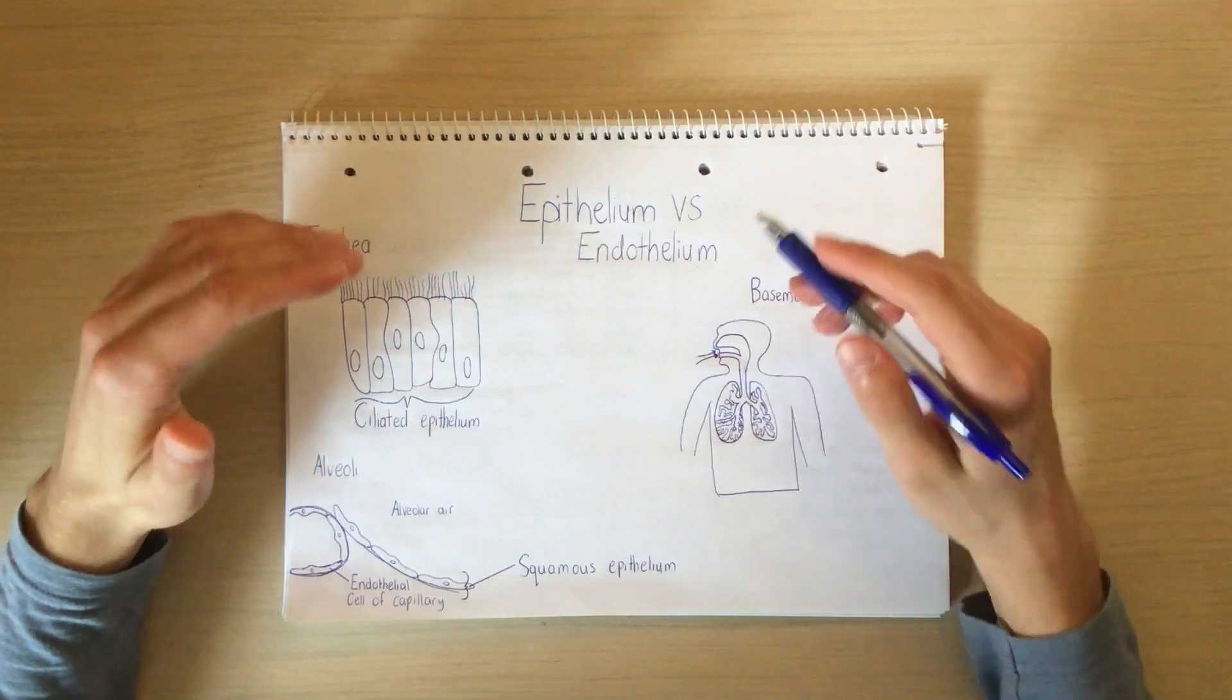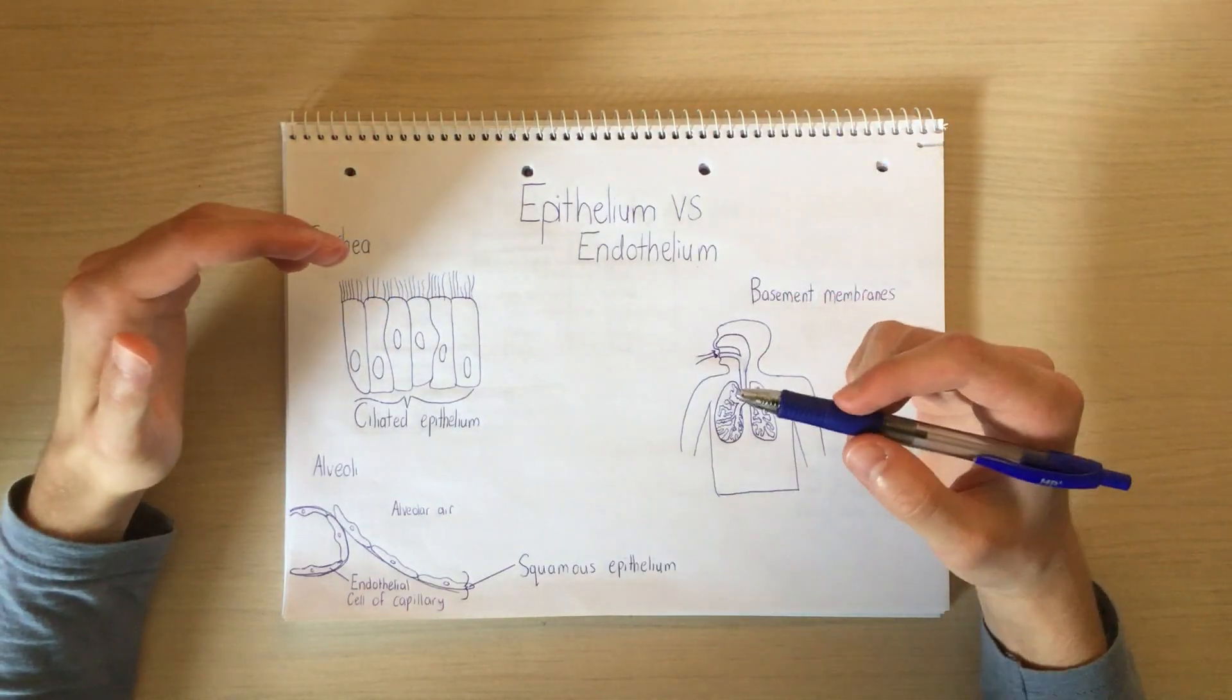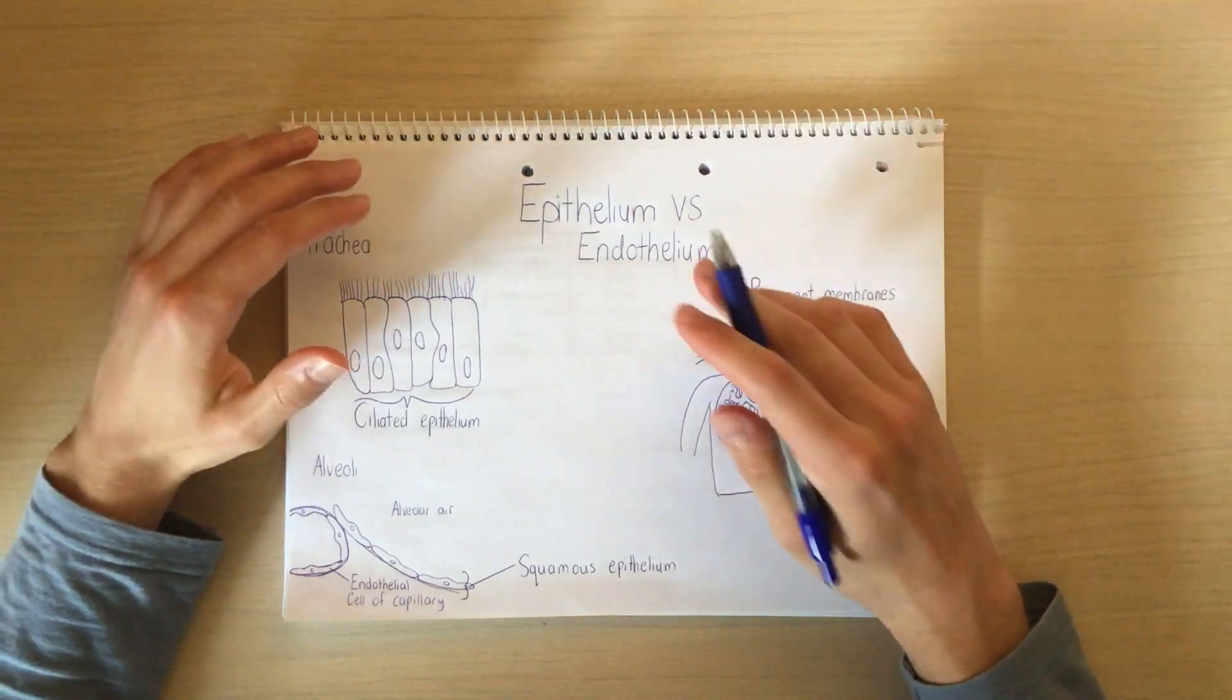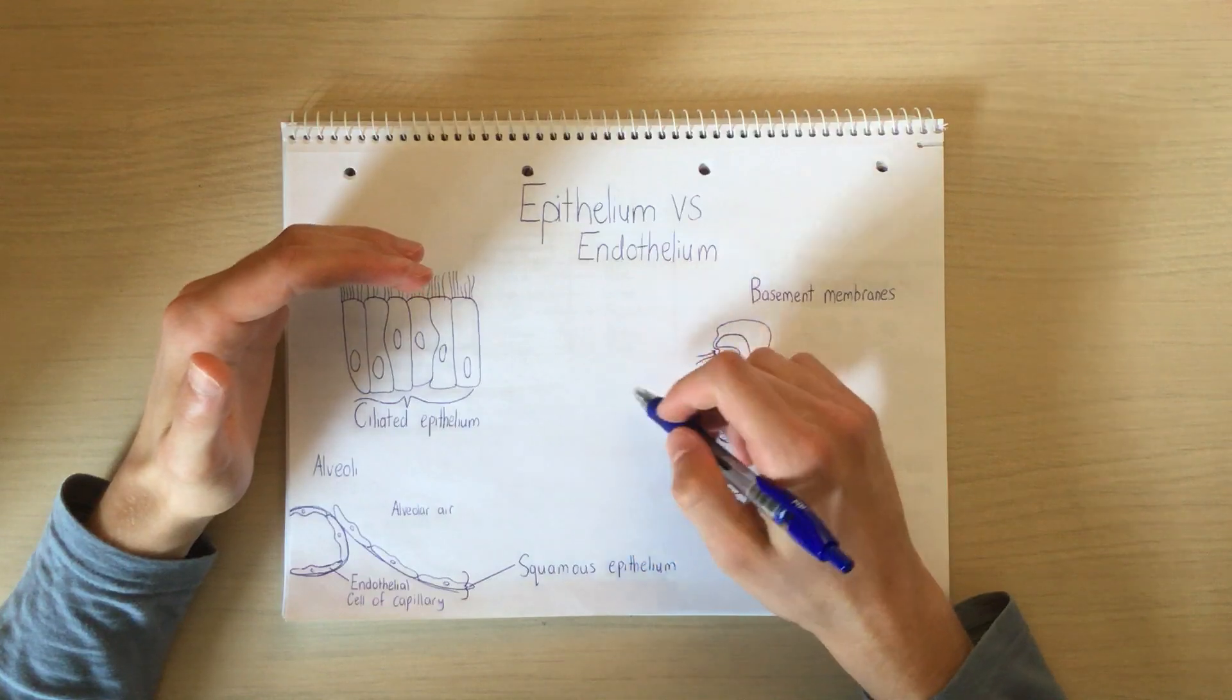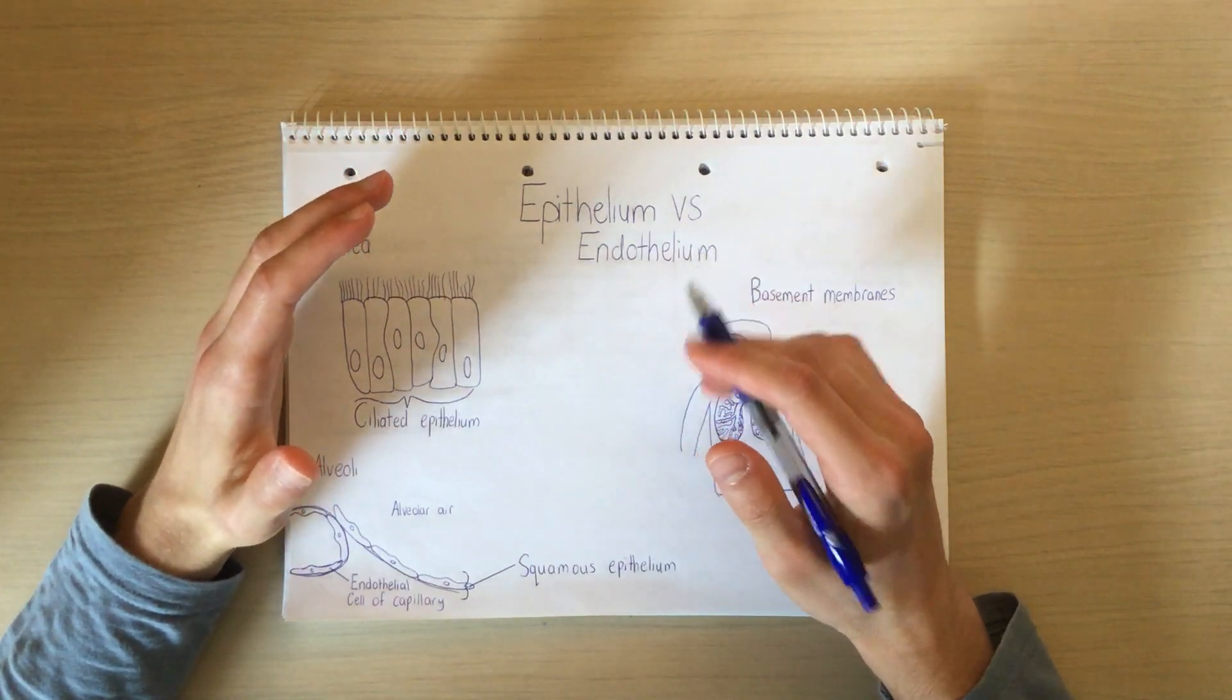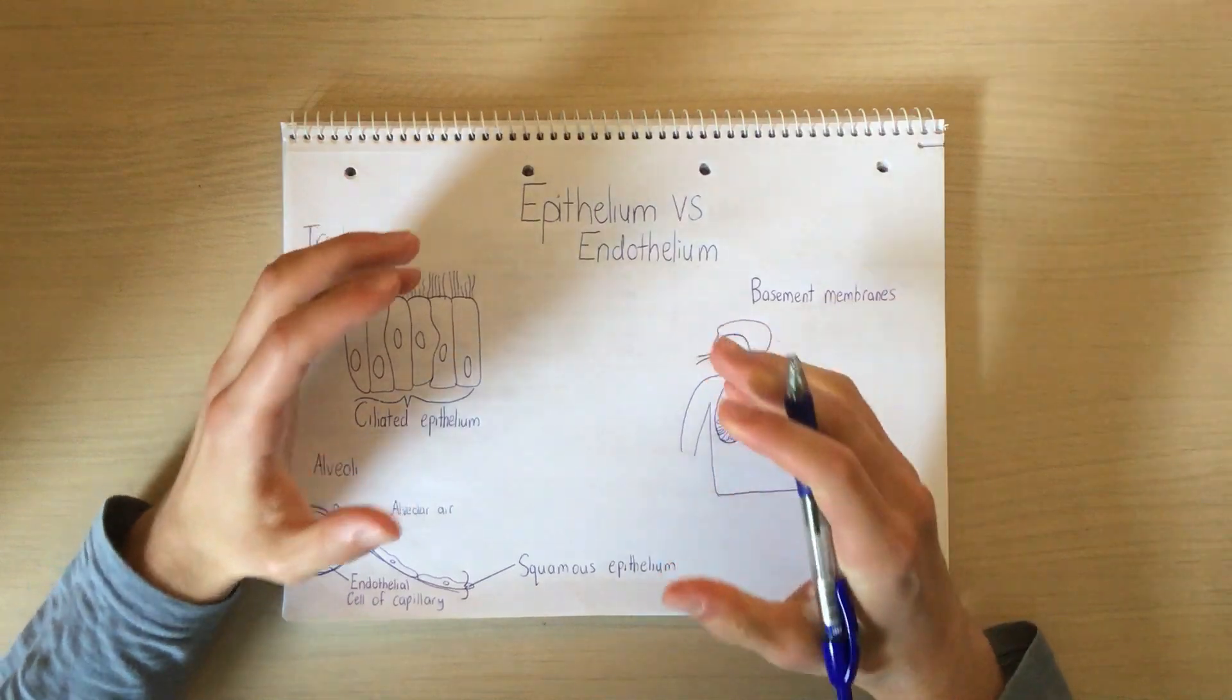Now, before we move on to the endothelium tissue, it's important to understand, in humans, our circulatory system is described as being double and closed. The double part refers to the fact that blood passes through the heart twice in each cycle. And the closed part, which is more important for this topic, is that all of the blood is contained within blood vessels.